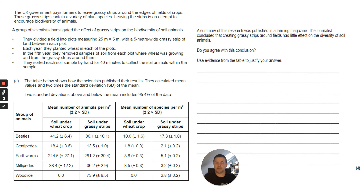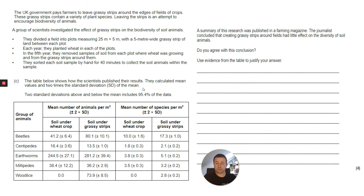This question gives lots of information and data — it's part of a larger question, so there may be more data than needed. Read the question carefully and analyze the data. Notice they're talking about standard deviations — you need to be aware of standard deviation of the mean and be able to evaluate whether results are significantly different or whether there is overlap, meaning no significant difference between whatever they're looking at.